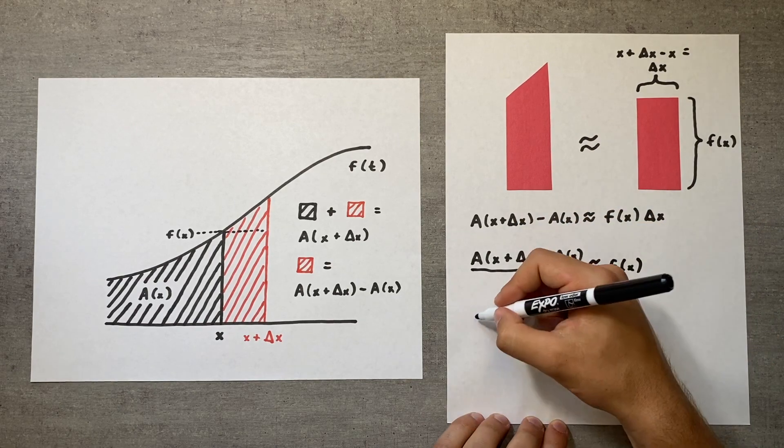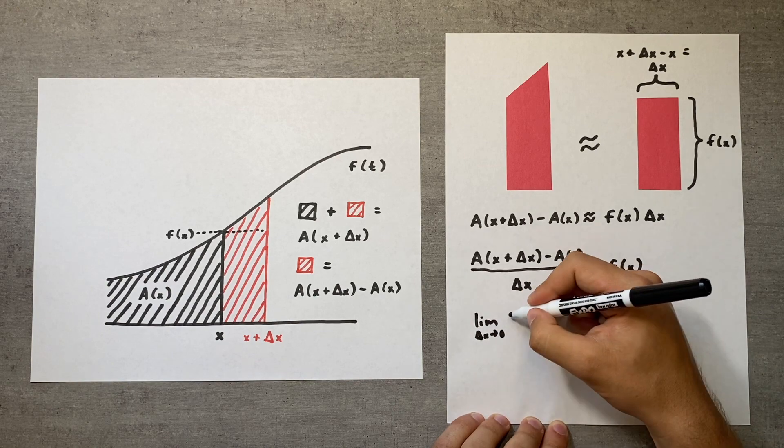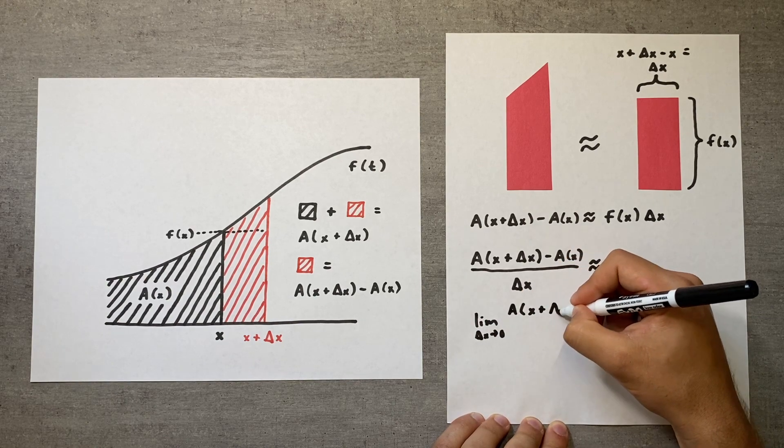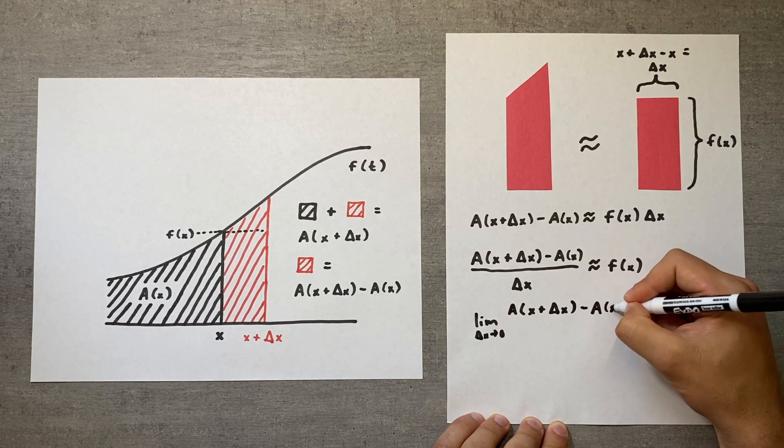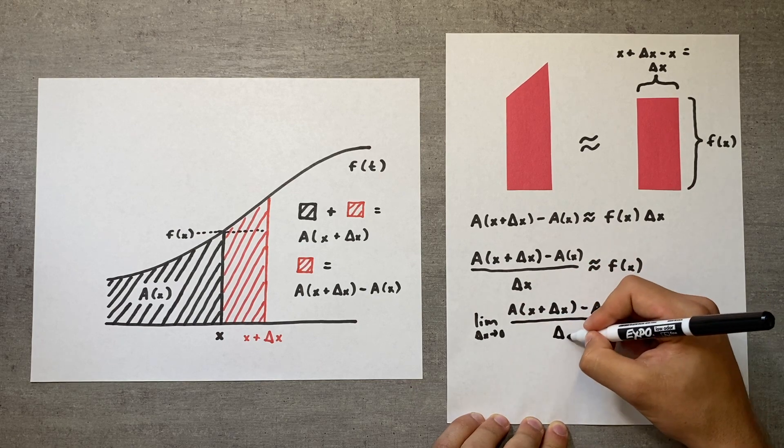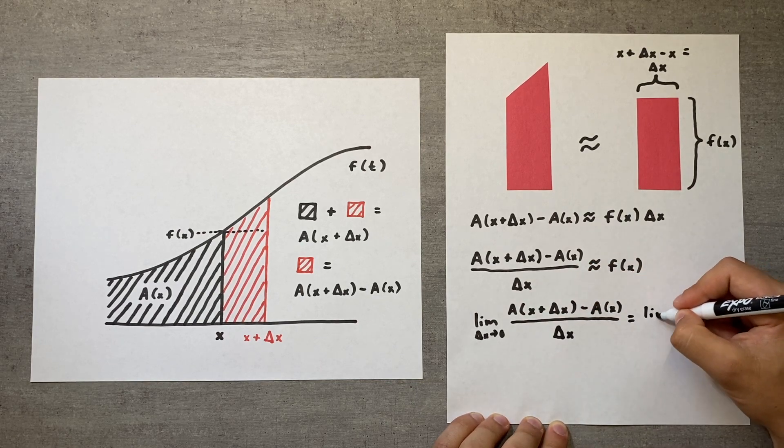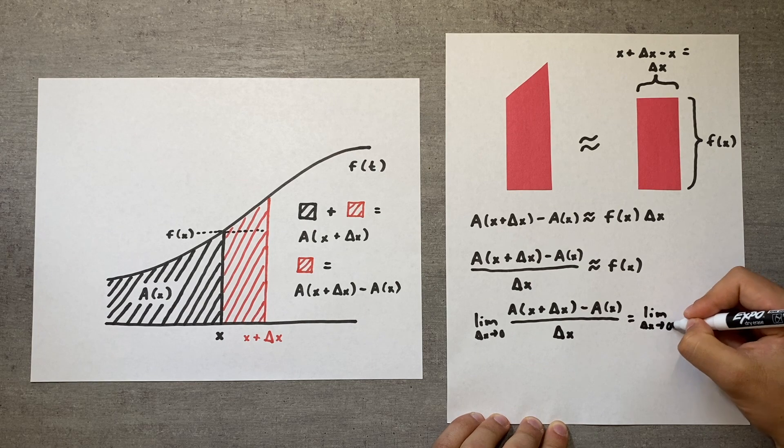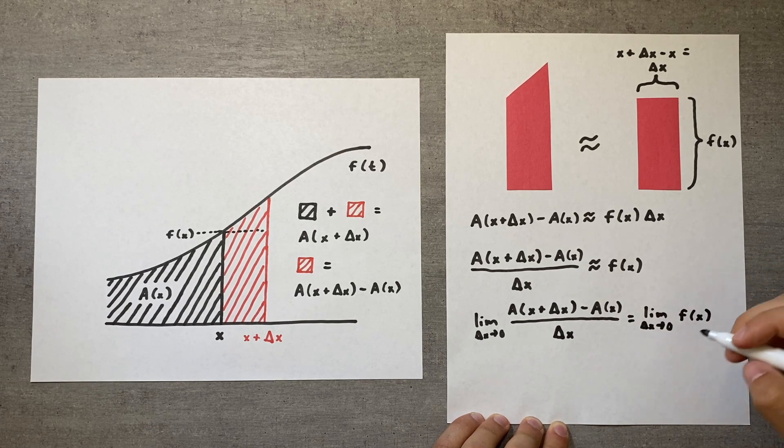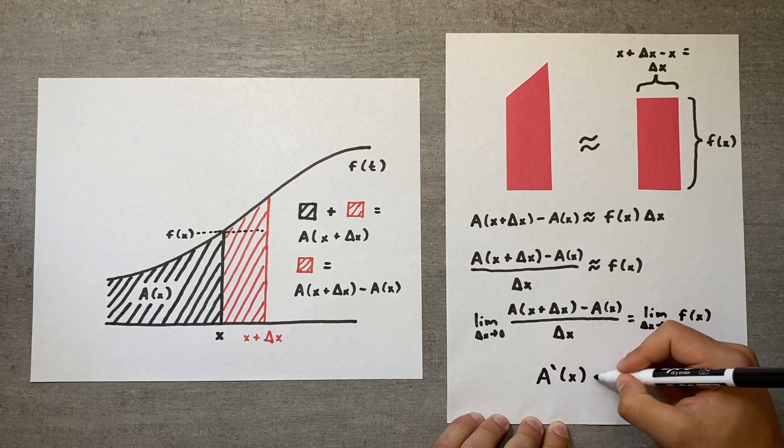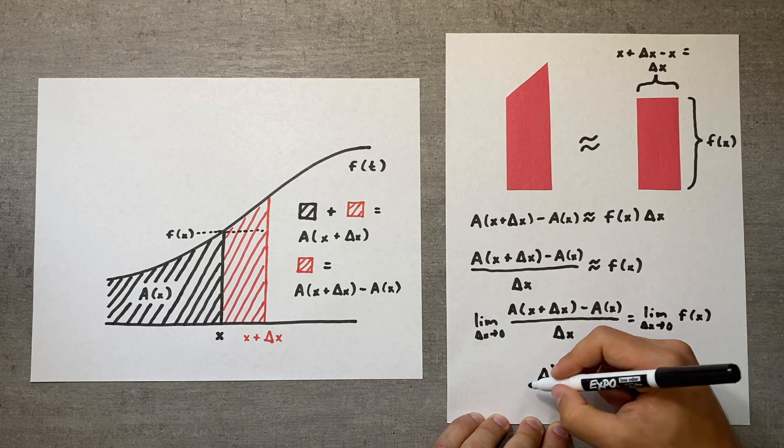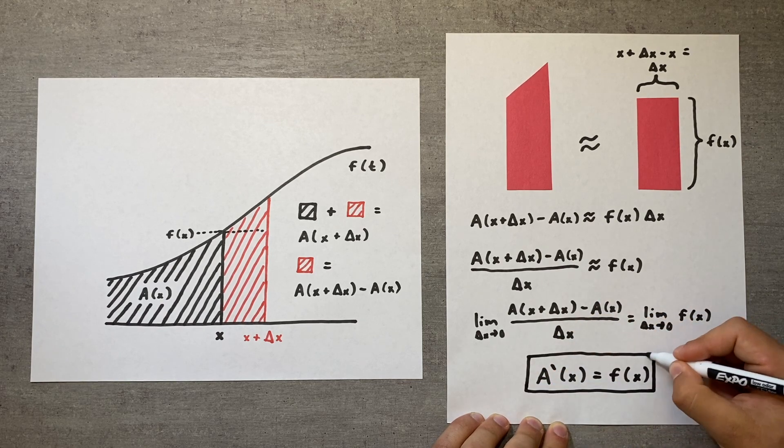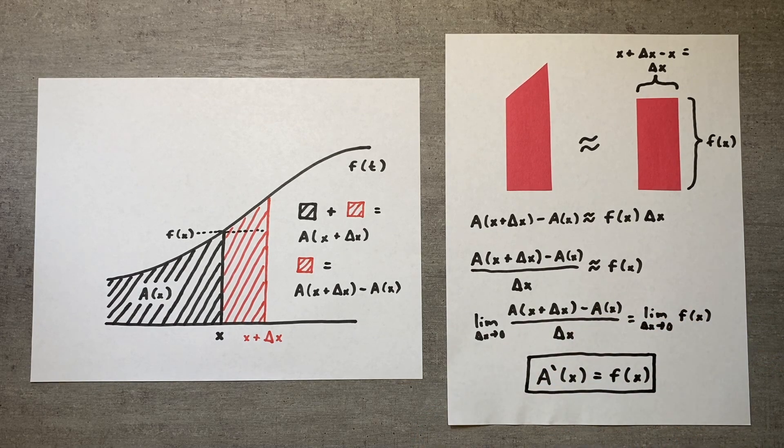Our final step is to take the limit as delta x approaches zero, which does two important things. First, it completes the definition of the derivative on the left hand side, which allows us to rewrite it as a prime of x. Second, it turns the approximately equal sign into an equal sign, since the area of the rectangle becomes infinitely close to the actual difference in area. This proves the theorem.